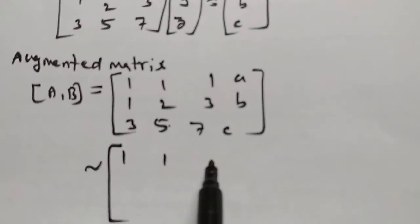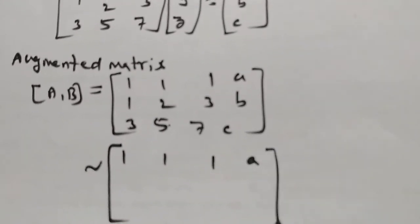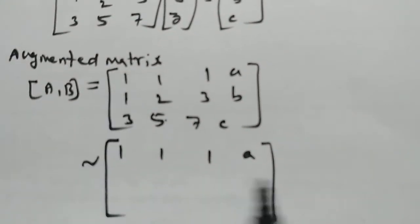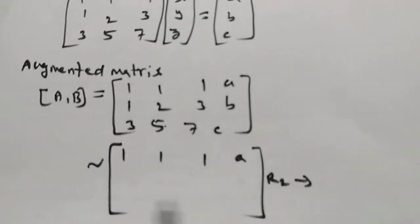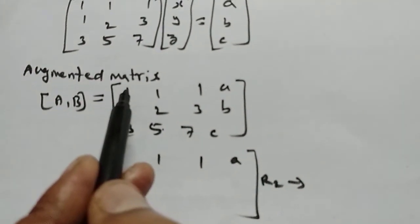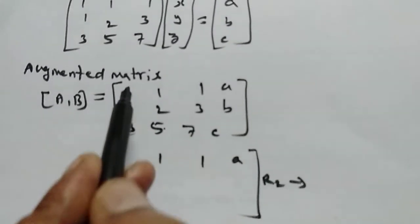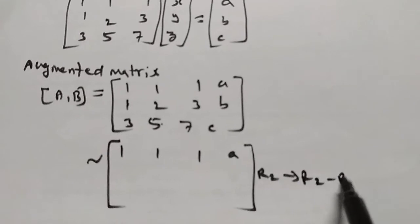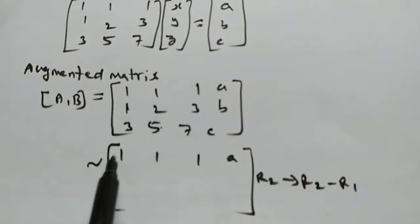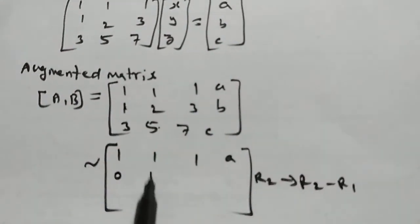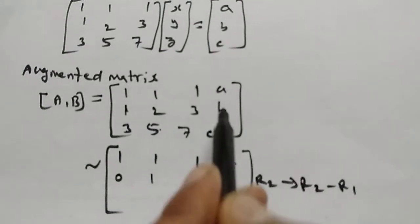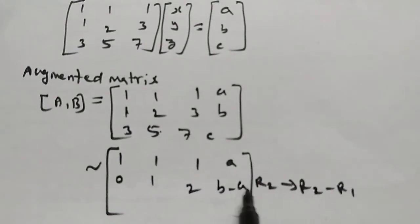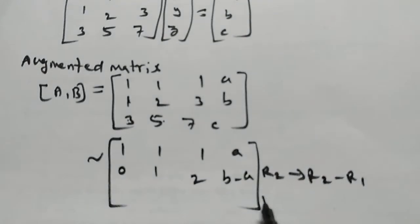This gives us: R1 remains 1, 1, 1, a. R2 becomes 0, 1, 2, b minus a. R3 → R3 minus 3 into R1.